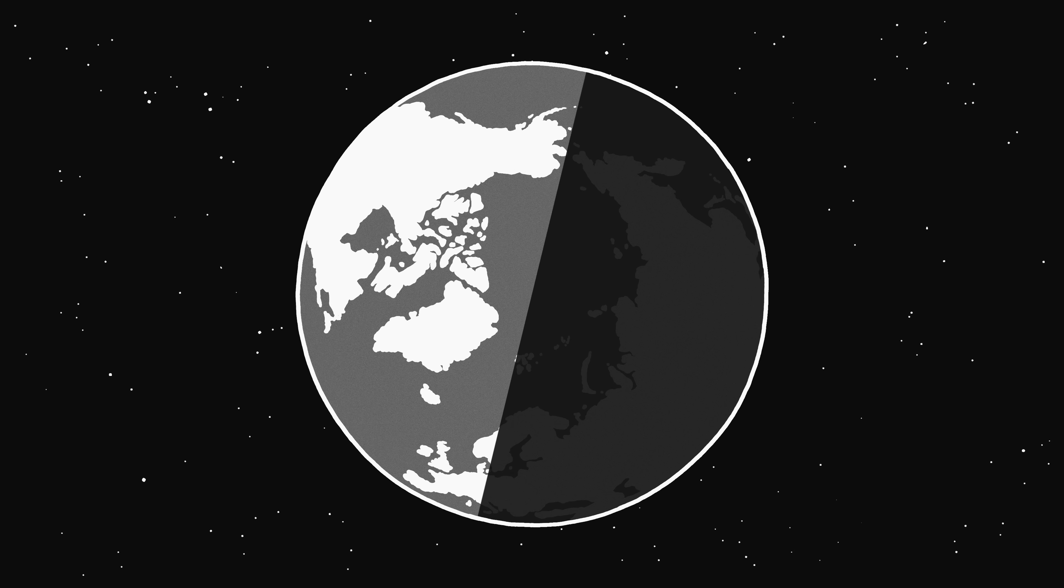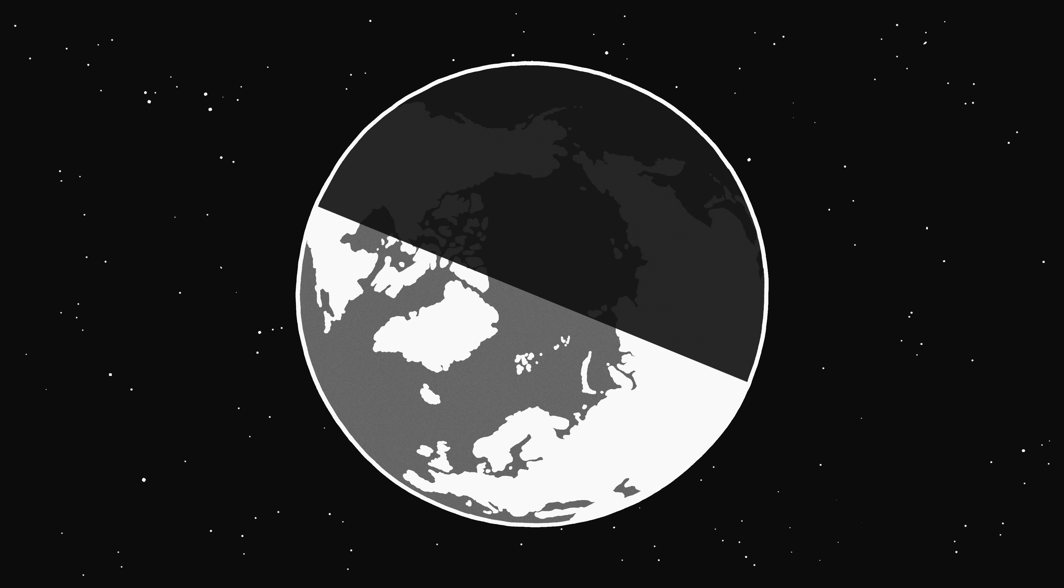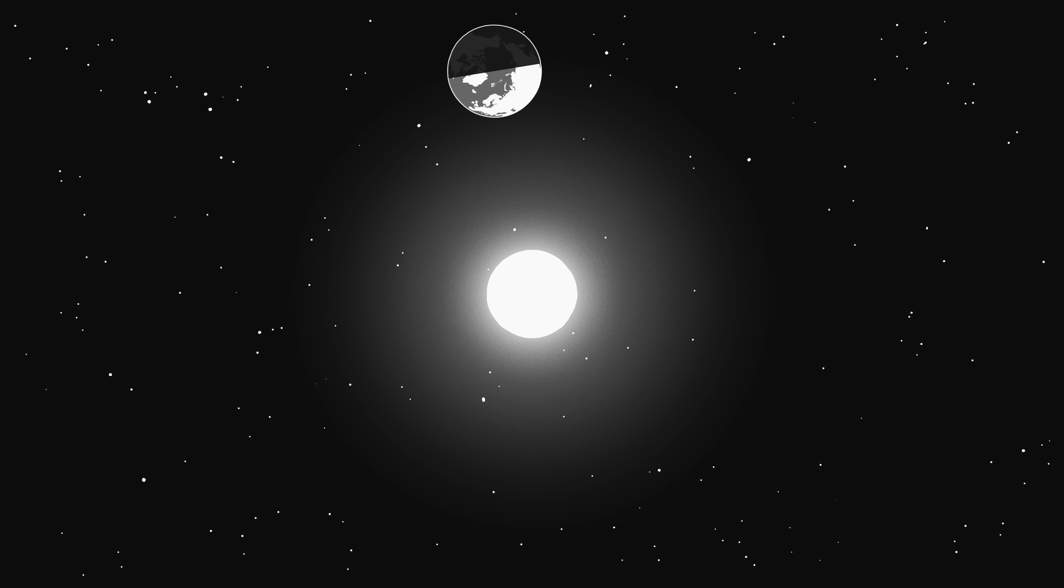If the earth stopped spinning completely, the normal cycles of day and night would end. The sun wouldn't completely stop moving across the sky, but it would slow down a lot. As the earth's orbit carried us in a circle, we would see the sun rise and set exactly once a year.